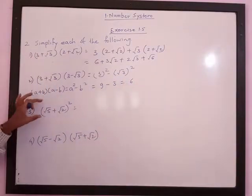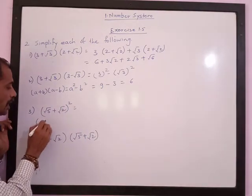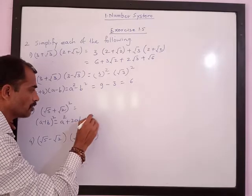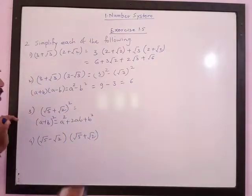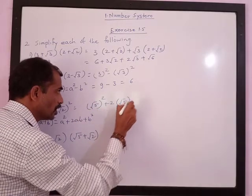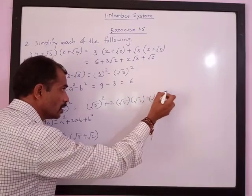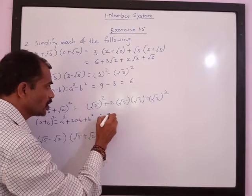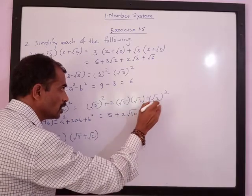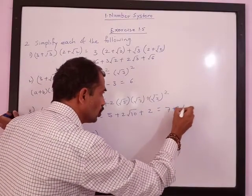Next is (root 5 plus root 2) squared. We use the formula (a plus b) squared equals a squared plus 2ab plus b squared. So this equals root 5 squared plus 2 times root 5 times root 2 plus root 2 squared. This is equal to 5 plus 2 root 10 plus 2. The answer is 7 plus 2 root 10.